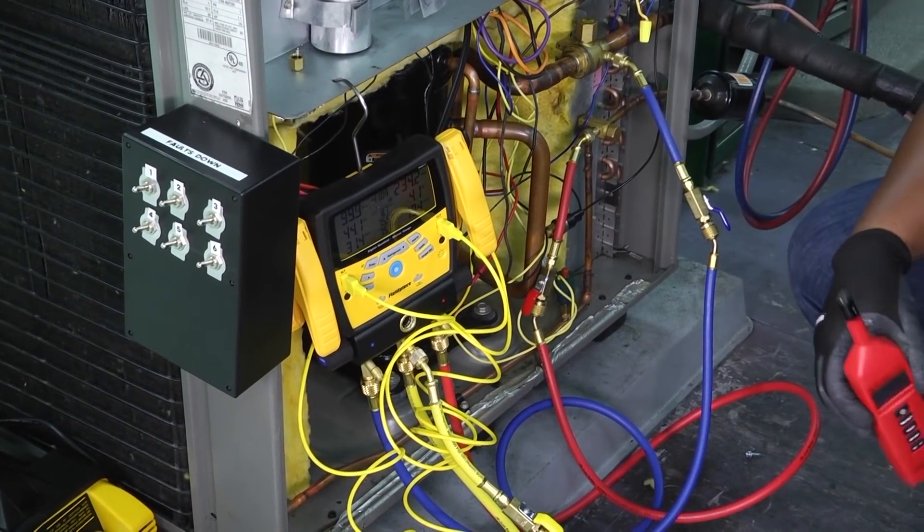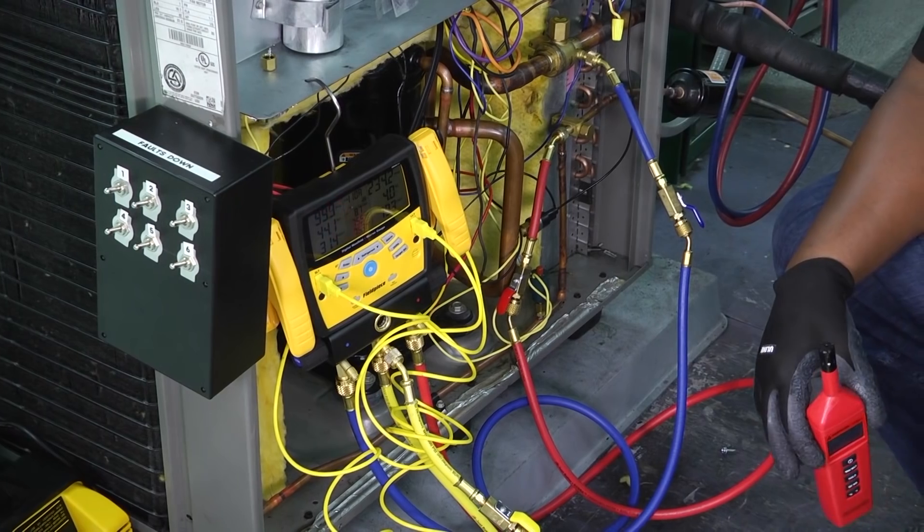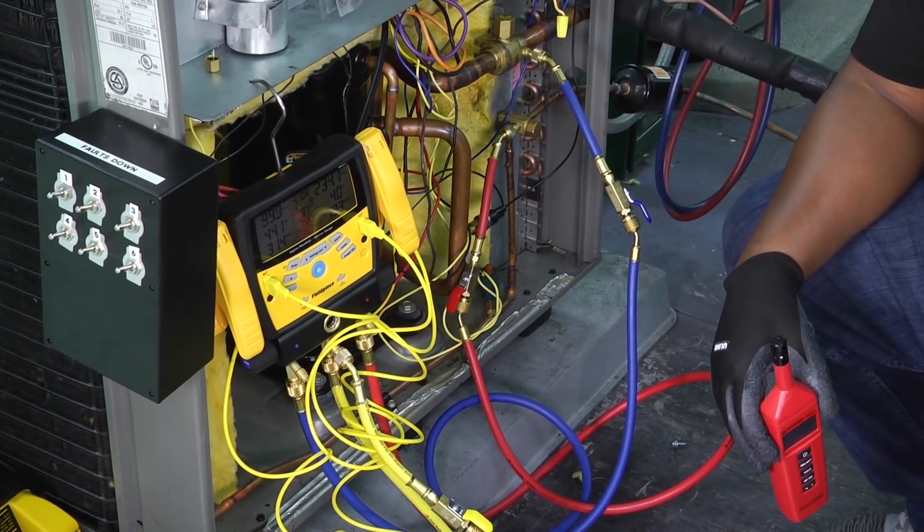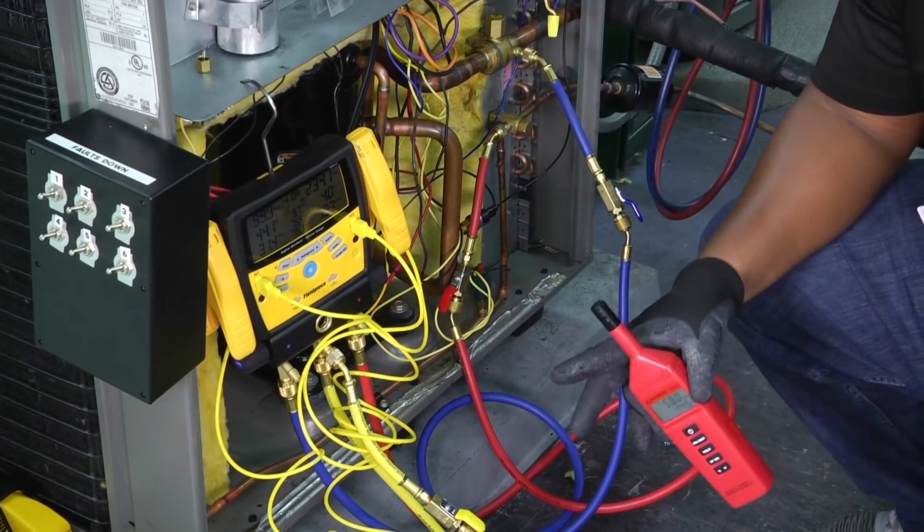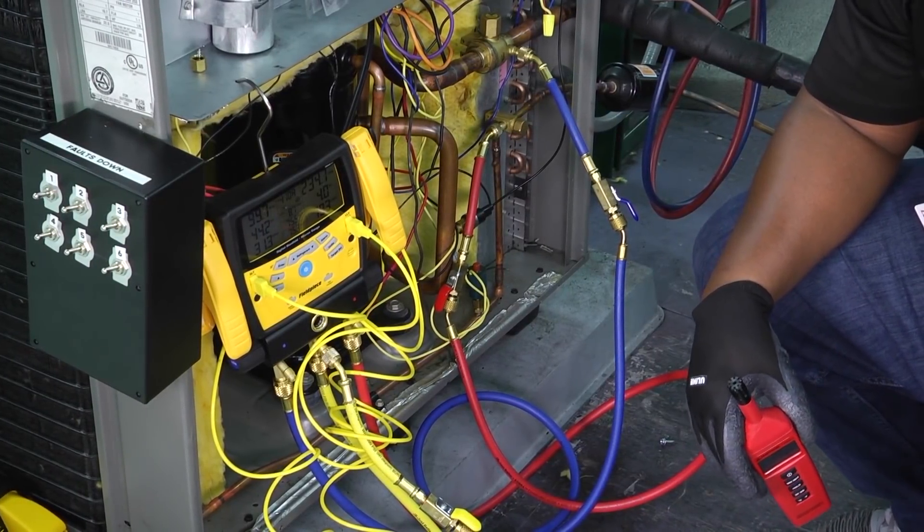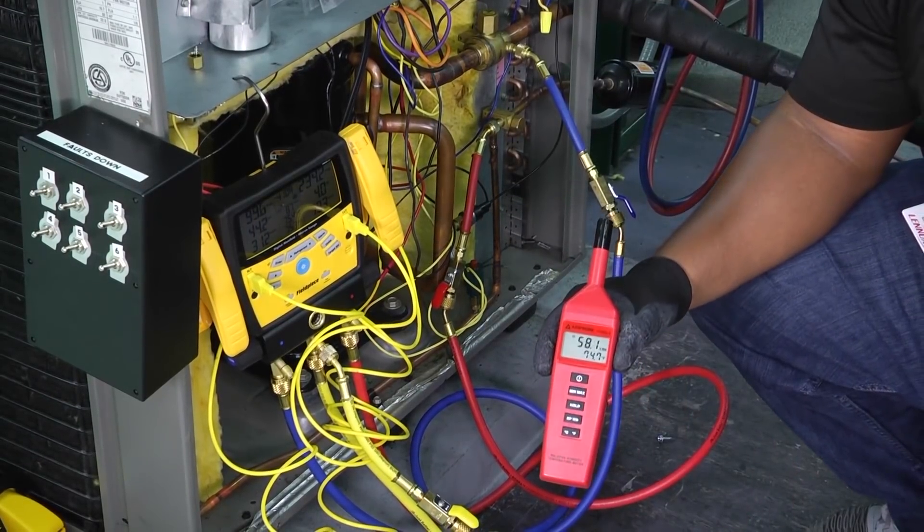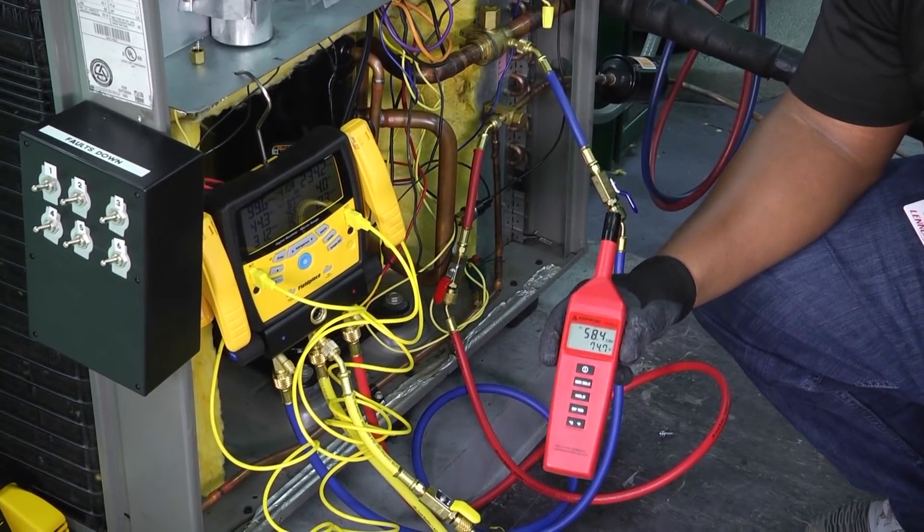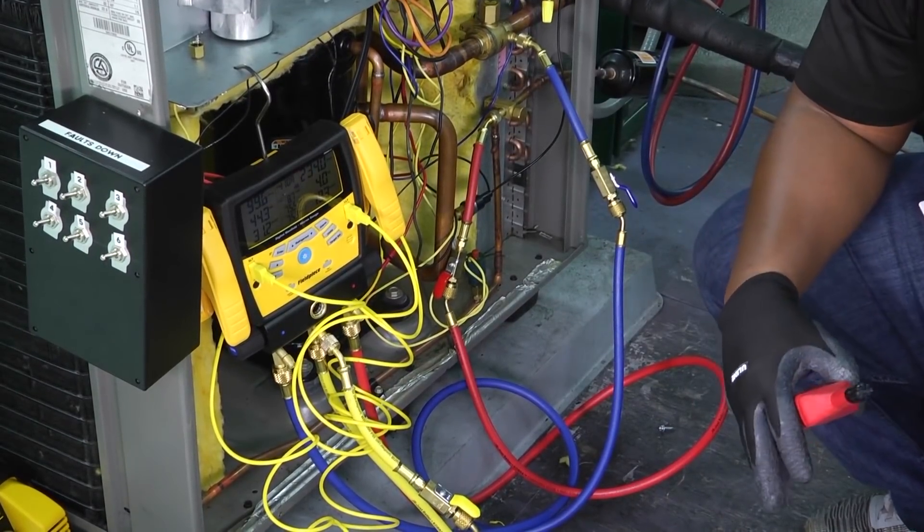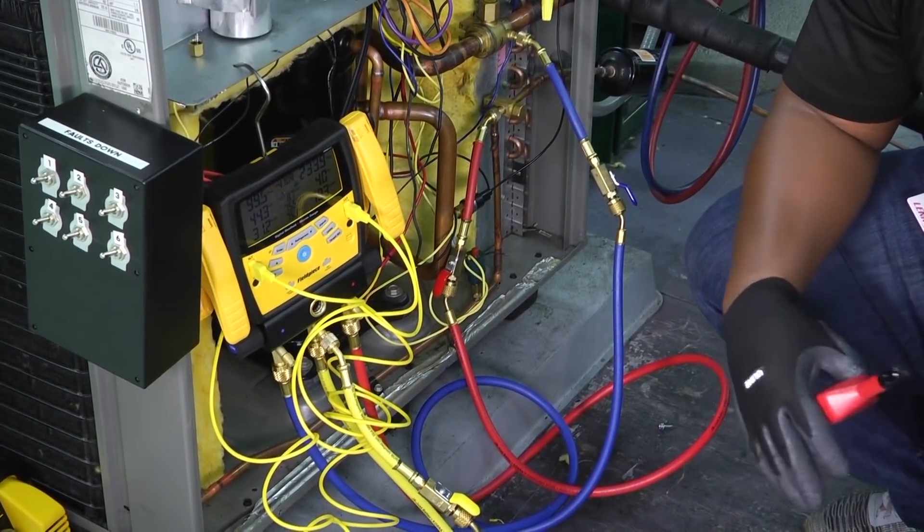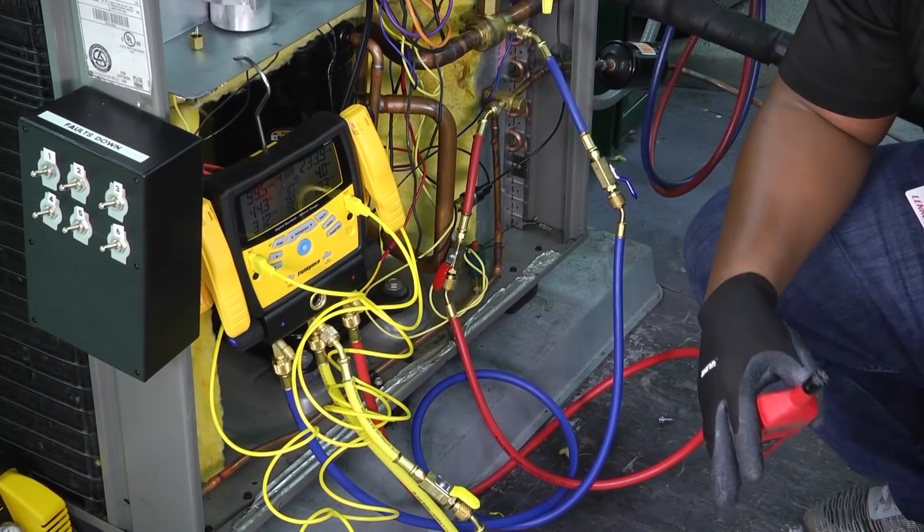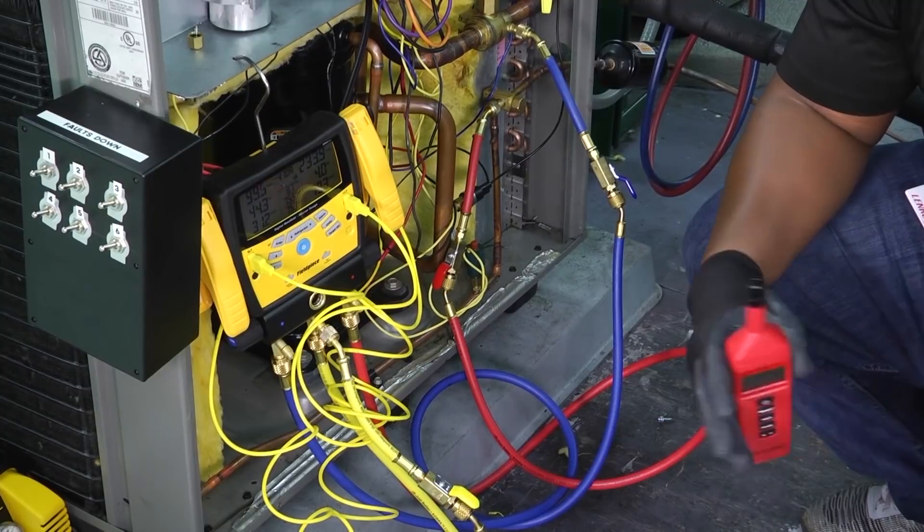So, just real quickly as we close, just a few things to remember when it comes to evaluating refrigerant charge. One, you've got to have your superheat and subcooling number. Number two, you have to know which type of metering device you have on your system. Number three, make sure you have a digital psychrometer so that you can calculate wet bulb temperatures. Number four, refer to any charts or manufacturer specifications on data tags to find the desired subcooling or superheat and subcooling ranges.